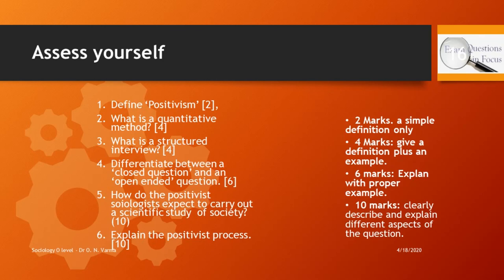We are now going to look at assessment questions. You may get 2, 4, 6, 10, or even 15 mark questions. For 2-mark questions, give a simple definition only. For 4-mark questions, give a definition plus an example. For 6-mark questions, explain with a proper example. For 10-mark questions, provide a clear description and explanation of the different aspects of the question. Practice questions: define positivism (2 marks); what is a quantitative method (4 marks); what is a structured interview (4 marks); differentiate between a closed question and an open-ended question (6 marks); how do positivist sociologists carry out a scientific study of society / explain the positivist process (10 marks).